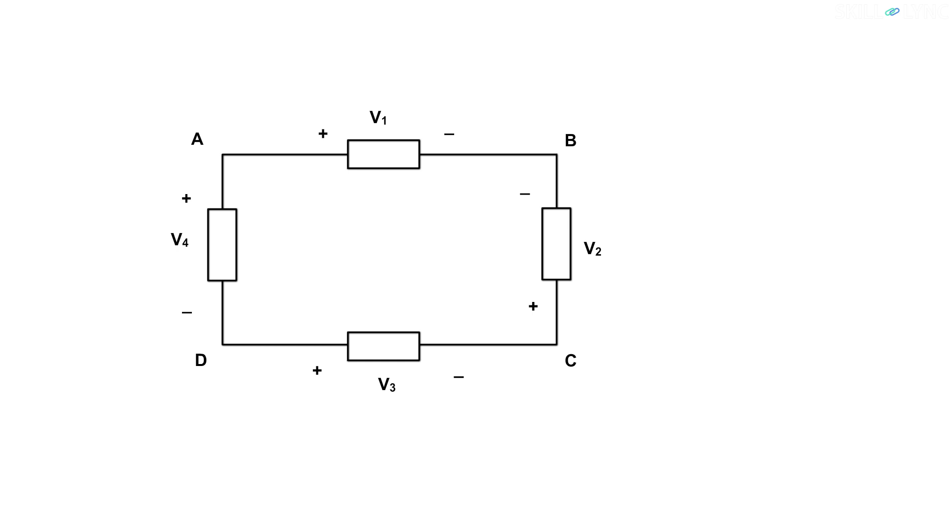Let's have a look at the circuit here. We move around the loop in the direction of ABCDA. The sign convention we will follow is: if while moving around the loop, the positive terminal is encountered first, then that voltage will be considered positive. Otherwise, it will be considered negative. While moving from A to B, the positive terminal is encountered first. Hence, we have positive V1.